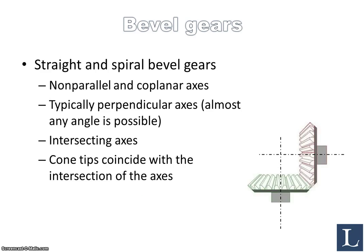For the straight and the spiral bevel gears, the axes are non-parallel and co-planar. Typically they are perpendicular, but almost any angle between the axles is possible. The axes also intersect, where this axis intersects this one. The cone tip — meaning if we create a cone like this, the tip of those two cones will coincide with the intersection of the axes.